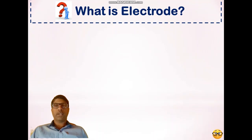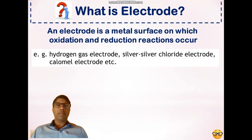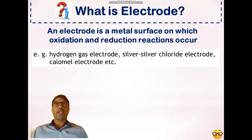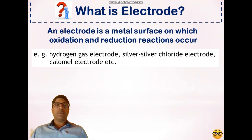Let's see first what is an electrode. An electrode is a metal surface on which oxidation and reduction reactions occur. The metal surface which acts as an electrode is divided into two types: first, inert electrode — for example, platinum electrode, which serves for electrical contact purposes — and second, active electrode, which provides a surface for oxidation and reduction reactions.